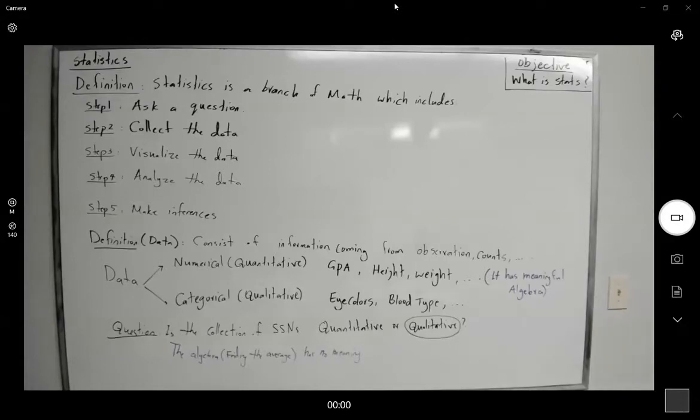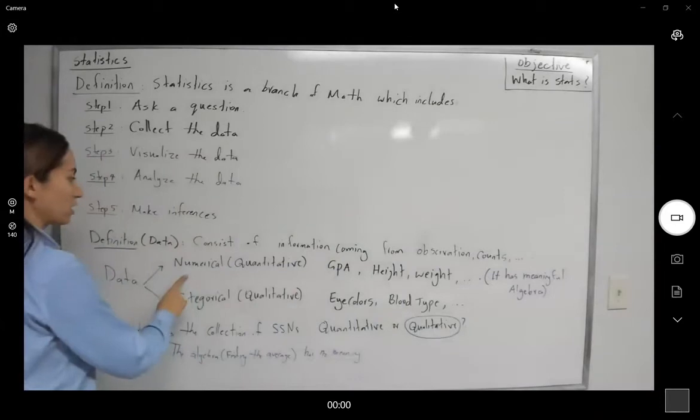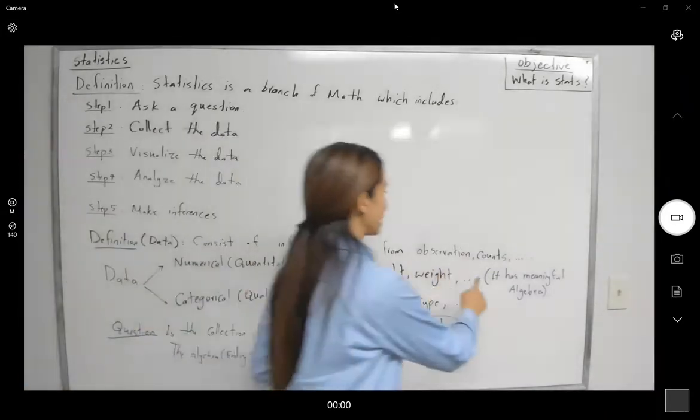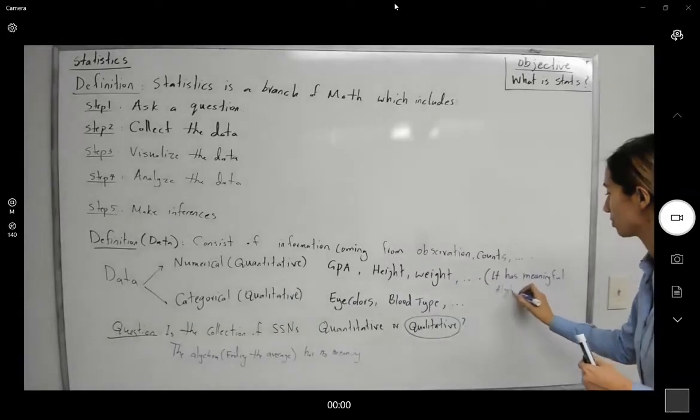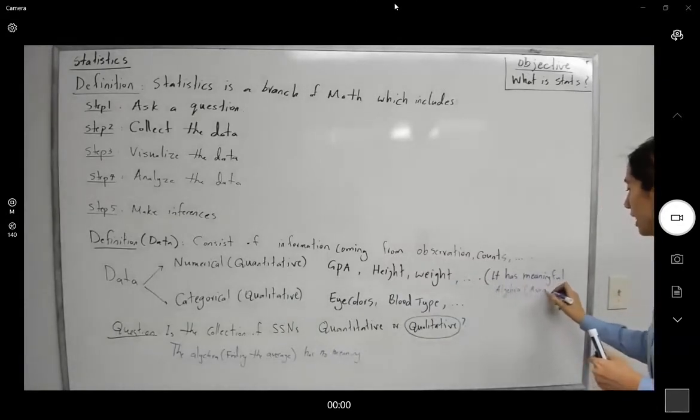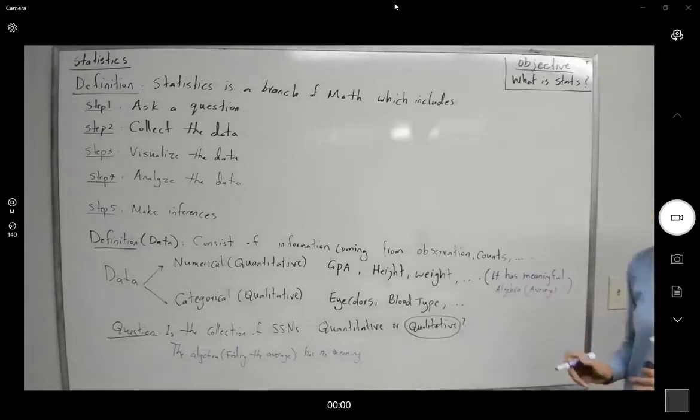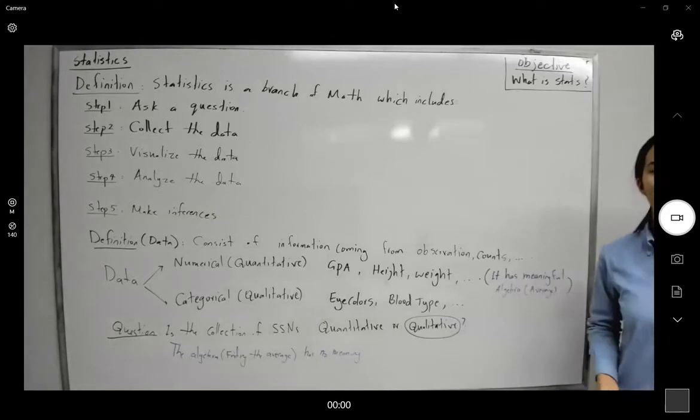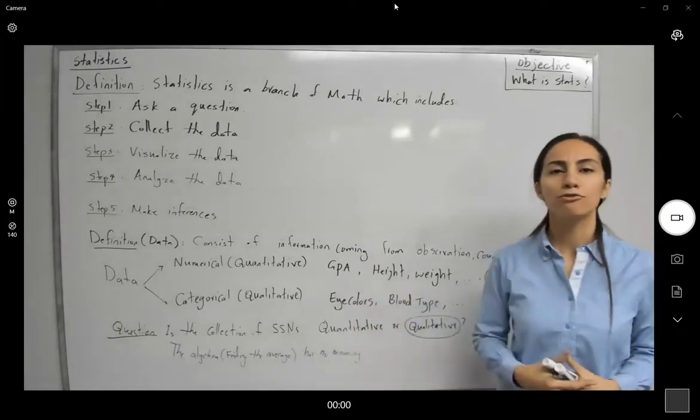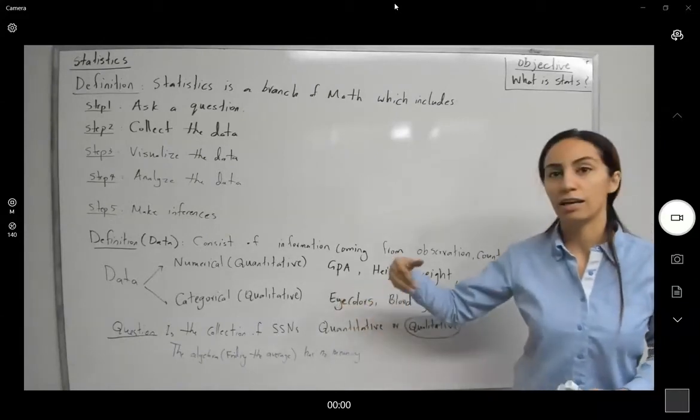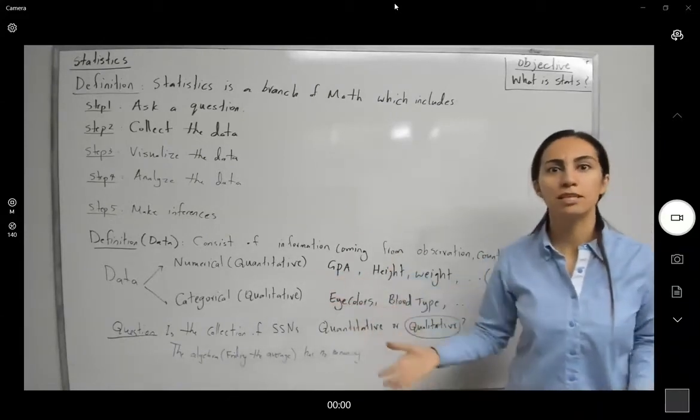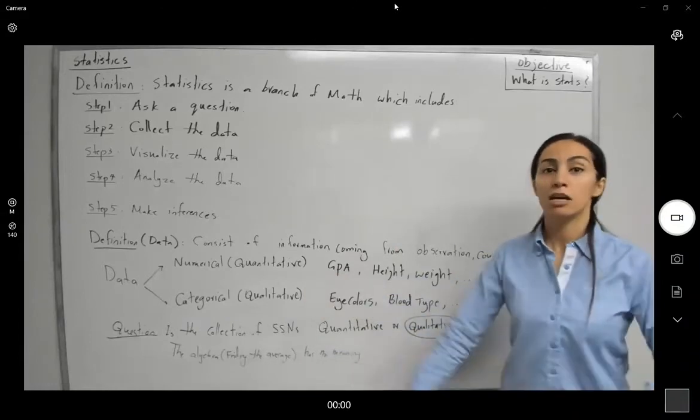So let's go over this again. When it comes to numerical data, it has meaningful algebra, like finding the average. If you find the average of the data, it has some meanings. Like the GPAs, if you want to find the typical GPA, the average GPA, you can find the average and that has a meaning. The average GPA of this class is 3.8.